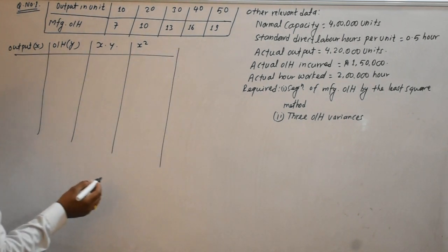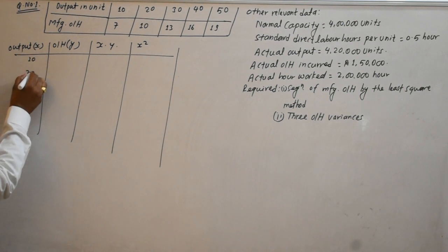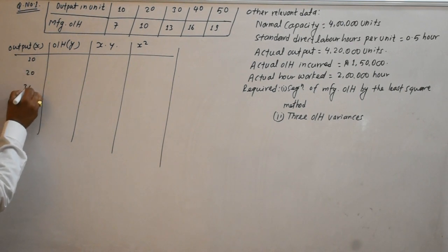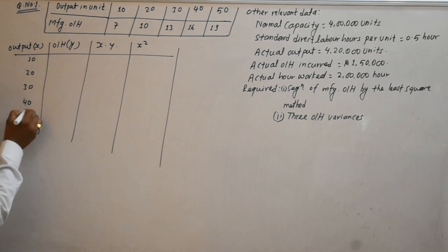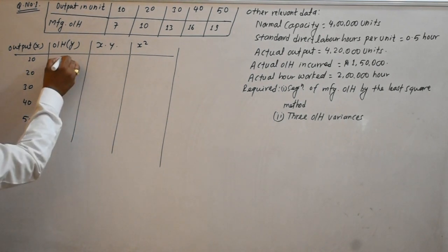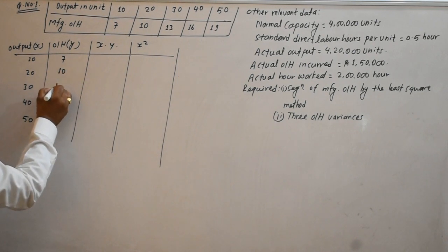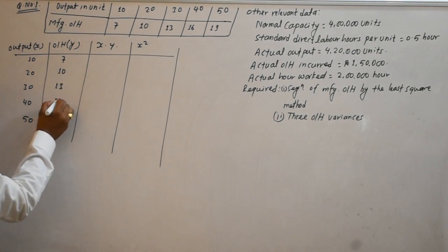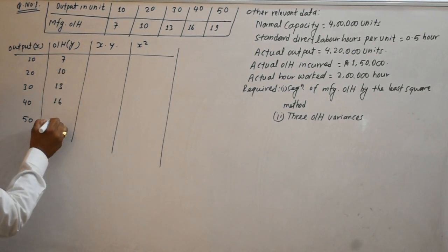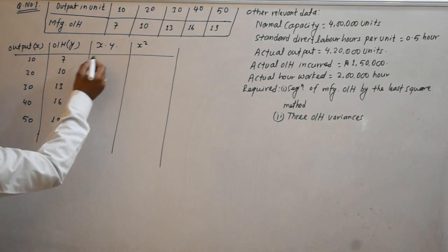The x values are 10, 20, 30, 40, and 50. The y values are 7, 10, 13, 16, and 19.